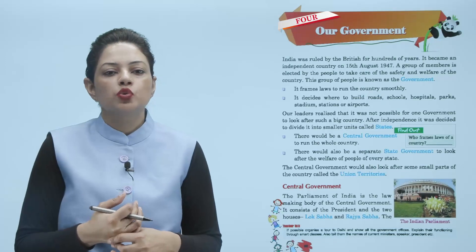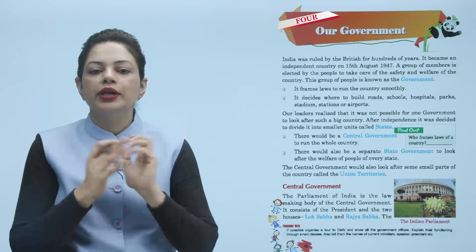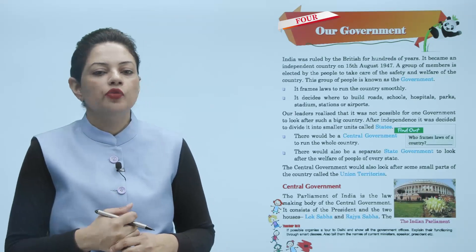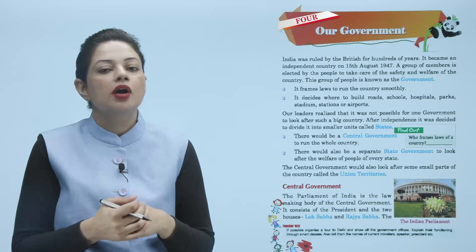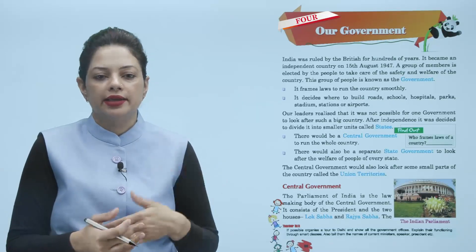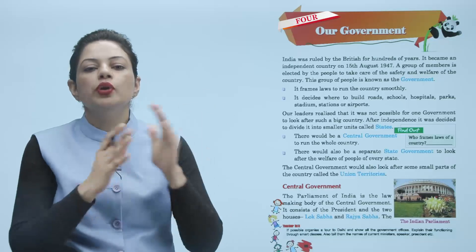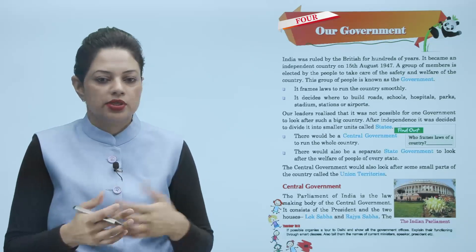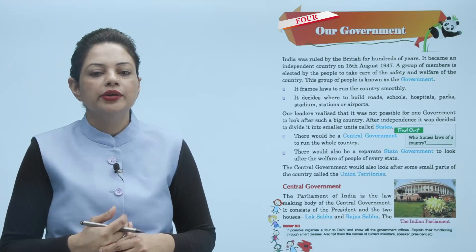There would be a central government to run the whole country. तो उन्होंने एक बनाई central government जिसका काम था पूरी country को run करना। There would also be a separate state government to look after the welfare of people for every state. इंडिया में 28 states हैं, तो हर एक state के लिए एक state government बनाना — ताकि वो अपने state में रहने वाले लोगों के लिए जिम्मेदार हो। Central government जो सारी state governments से ऊपर होगी, जो पूरी country के बारे में सोचेगी।